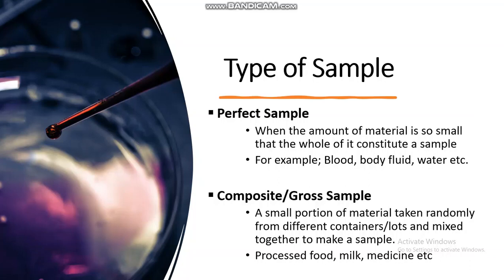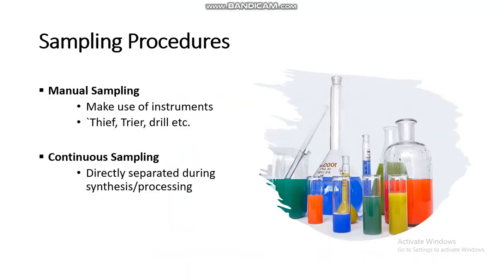A composite or gross sample is when a small portion of material is taken randomly from different containers or lots and mixed together to make a sample. Examples include processed food, milk, medicines, etc.